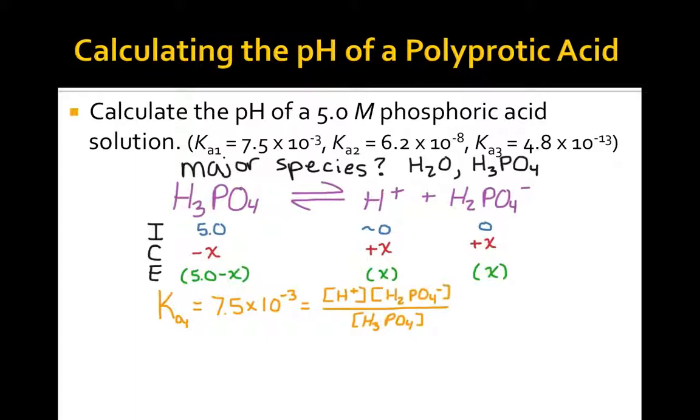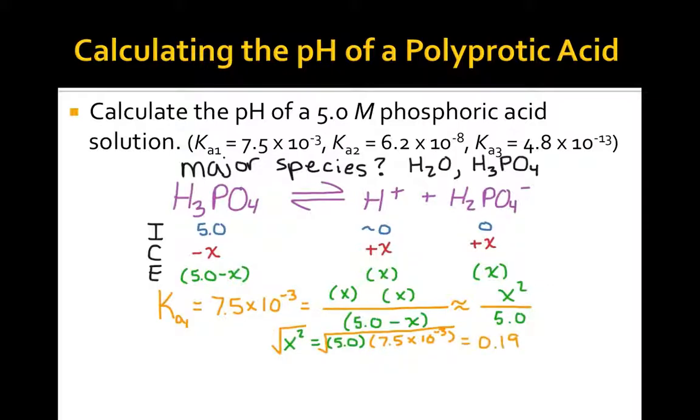The equilibrium expression for this first dissociation constant is shown here in yellow, and our substitutions are made in green. We can use an approximation here to quickly find x, which would be 0.19.